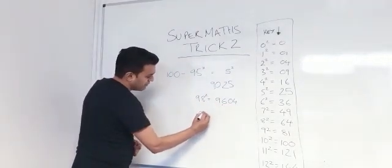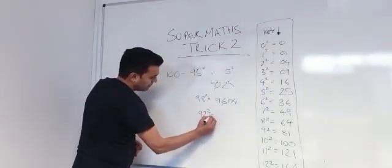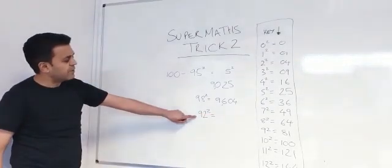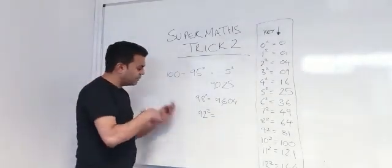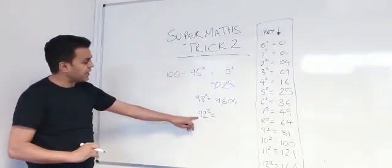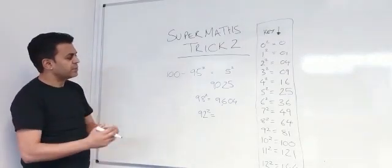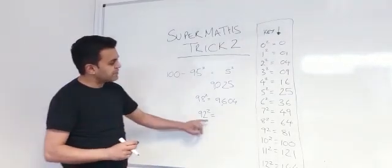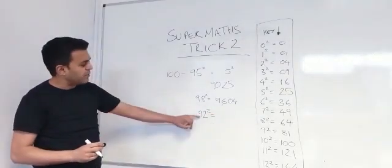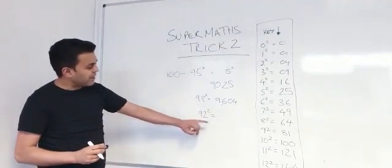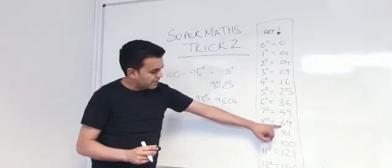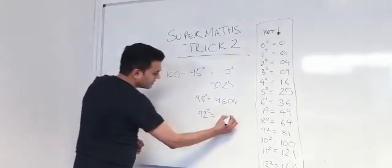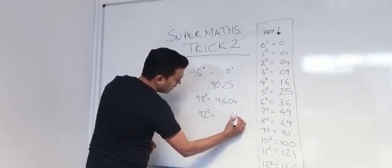What about 92 squared? How close is that to 100? You don't have to take away, you can reverse add it like 92 plus what is 100. 92 plus 8 is 100. So 100 take away 8 is 92. So what's the number here? 64. 8 times 8 is 64, so you put 64 there.